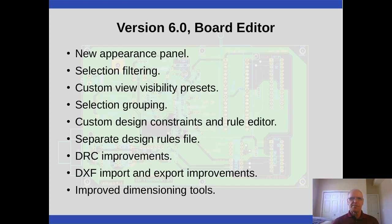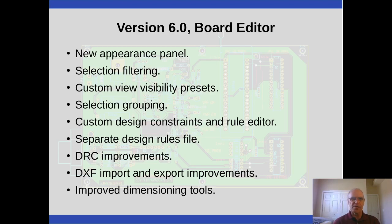The board editor received a new appearance panel, which includes selection filtering — letting you turn on and off different object types during block select — as well as custom views for different layer visibility presets. We now have selection grouping, allowing you to group objects by name, though grouping between the schematic editor and the board editor didn't make it into version 6 and is primarily for the board editor only — hopefully that'll happen in version 7.